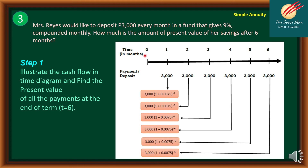For step one, we illustrate the cash flow in the time diagram and find the present value of all payments at T = 6. In the diagram, the payment nearest to time 0 — at month 1 — has exponent negative 1, since we discount it back one period. Payments at months 2, 3, 4, 5, and 6 have exponents negative 2, negative 3, negative 4, negative 5, and negative 6 respectively. The payment at month 6 has exponent negative 6.